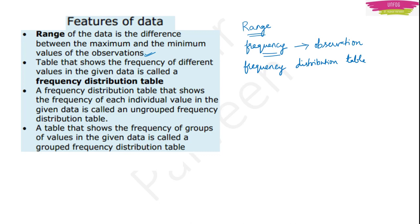This was about the frequency distribution table. In frequency distribution table also you will have two types. One is the ungrouped frequency distribution table and the other one is the grouped frequency distribution table. Ungrouped means it is a table where you will have individual values — the frequency of each individual value is shown. In grouped frequency distribution table, the frequency of groups of values will be given together.